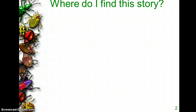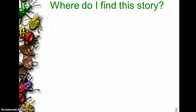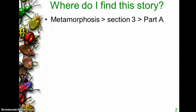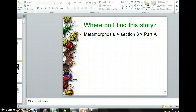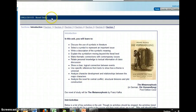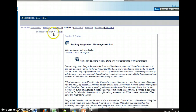So Metamorphosis is by Franz Kafka, and as far as where do you actually find the story, you're going to go to the Metamorphosis unit and then at the top, you're going to click on section three and then go to part A. That part A is then going to show you where the first part of the story is. You can see that I'm in Metamorphosis, which is our novel study. If I click on section three, part A, you'll see that Metamorphosis part one is right here.